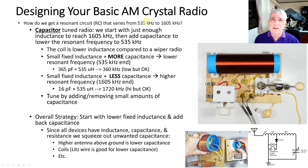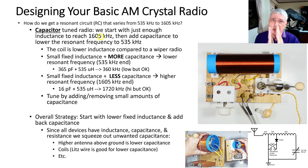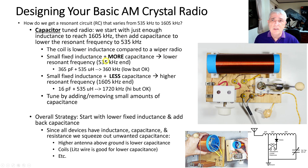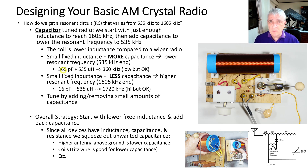For a capacitor-tuned radio, the same question applies but we approach it differently. We start with just enough inductance to reach 1605 kHz — the least amount of inductance — and then add capacitance back to reach the lower resonant frequency of 535 kHz. So the coil has lower inductance compared to a wiper radio. More inductance plus more capacitance gives a lower resonant frequency — keep that in mind.